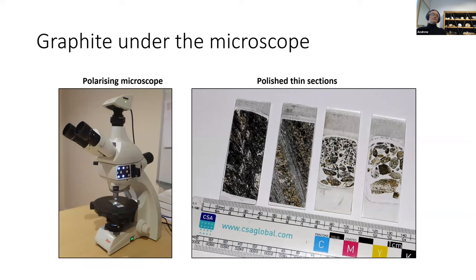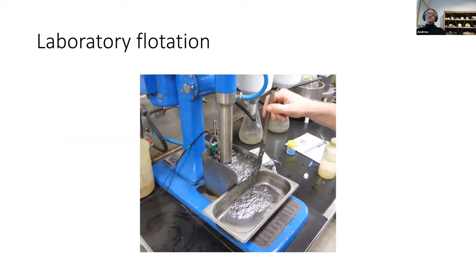We may also look at samples under the polarizing microscope, using polished thin sections — which could be from whole core or chips from an RC sample. A further stage in exploration would be to actually take samples, crush them to the appropriate size, and then use flotation to remove the graphite. That's a very important step in the whole process of actually getting to a mineral resource.